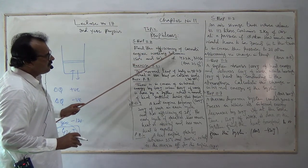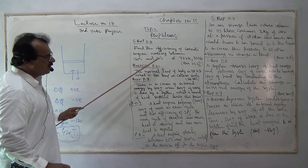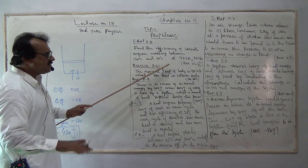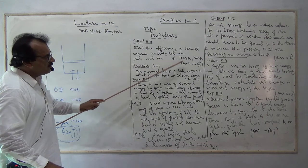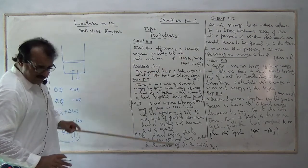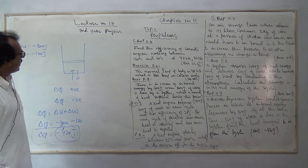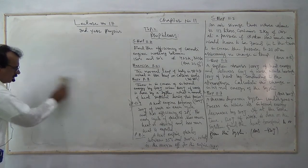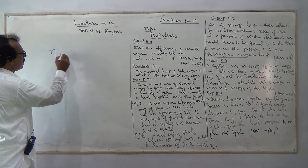Find the efficiency of a car engine working between 150 degree Celsius and a sink temperature. Here we have a source temperature and a sink temperature. The system is converted into Kelvin: T1 is 150°C converted, and T2 is the lower temperature. We apply the Carnot efficiency formula: efficiency equals 1 minus T2 over T1.